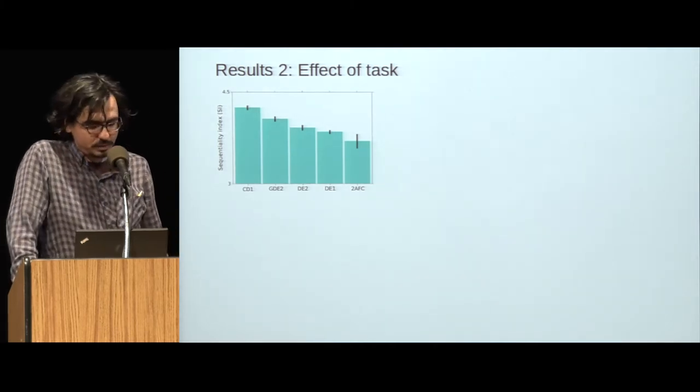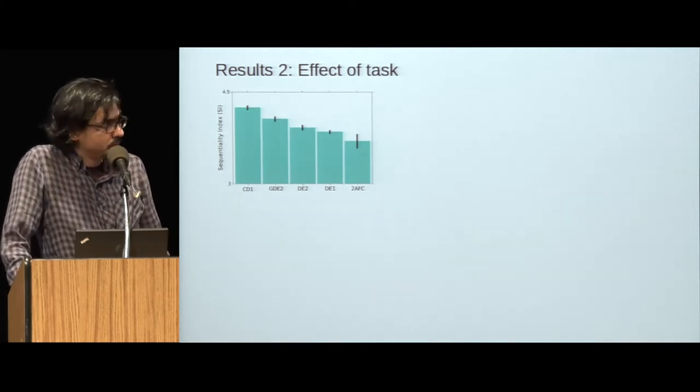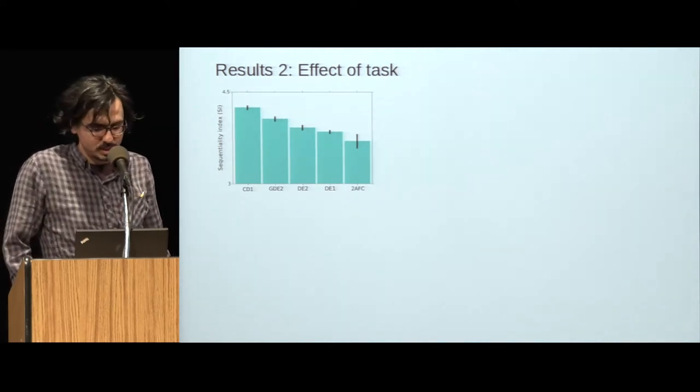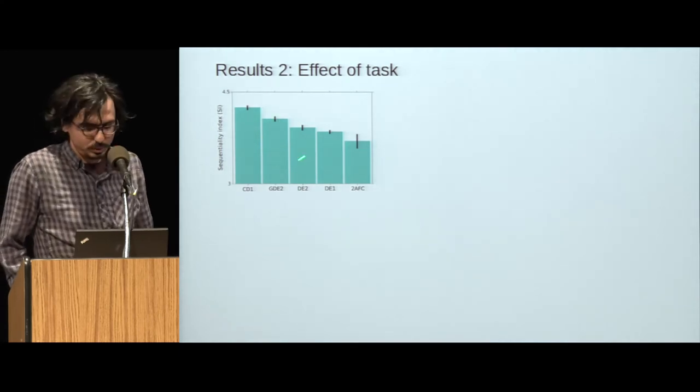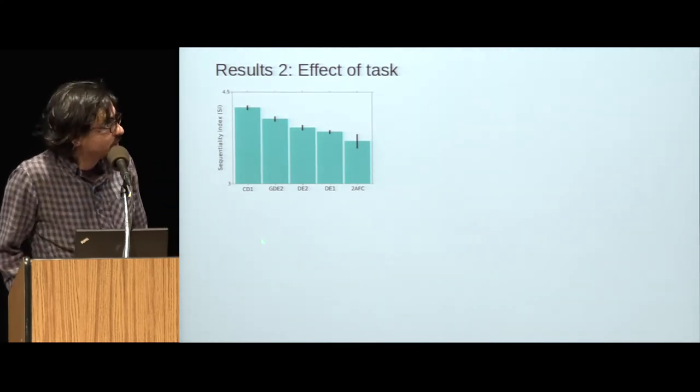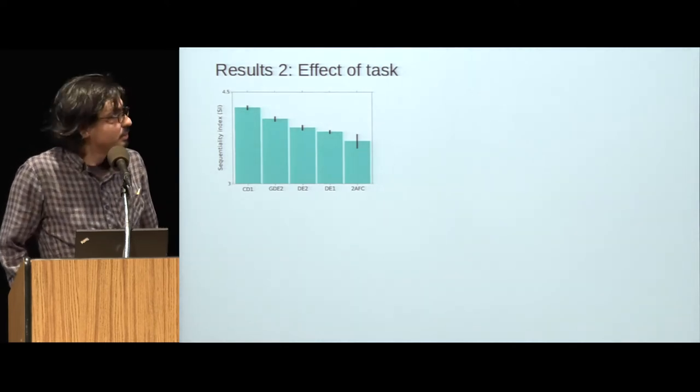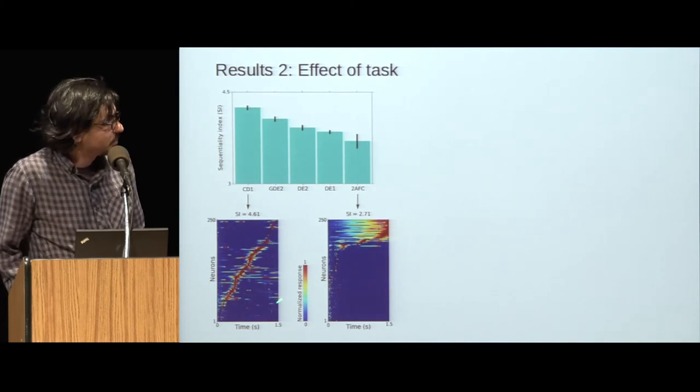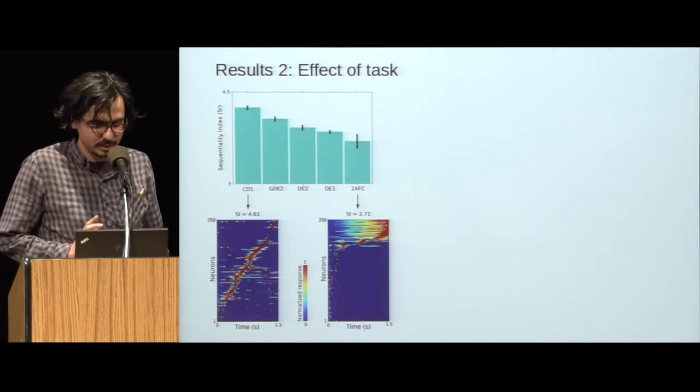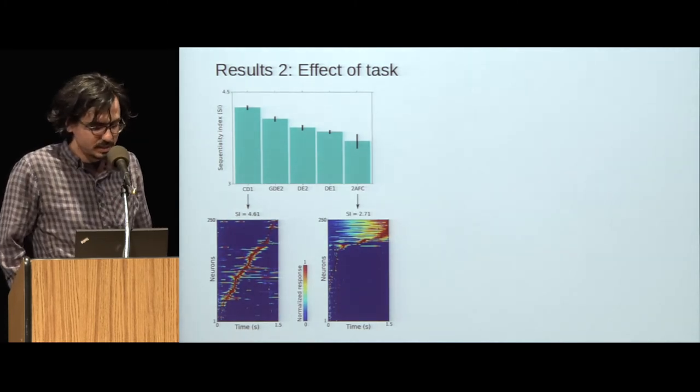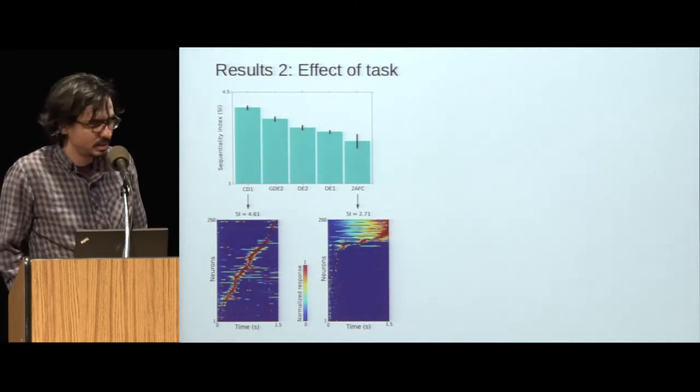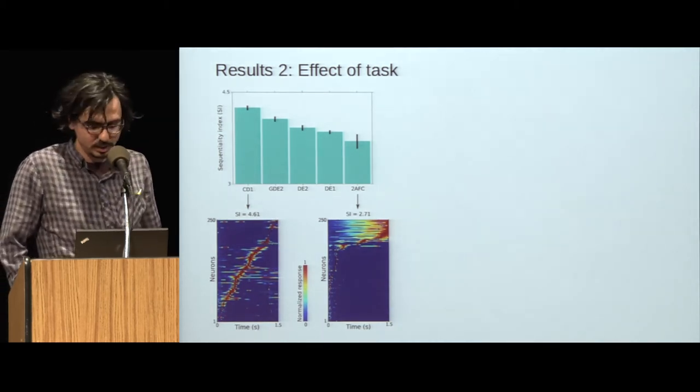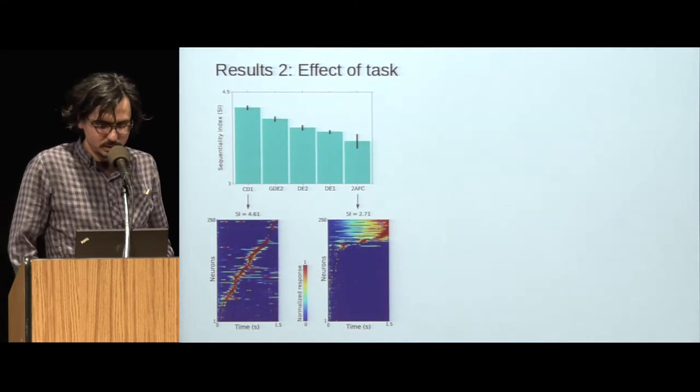Secondly, we look at the effect of task. We find a significant variation among tasks in their sequentiality index. Some of the tasks like change detection lead to highly sequential solutions, whereas others like the simple 2FC task lead to less sequential solutions. Here are example trials from each of these experiments using the exact same initial condition. In the change detection task, there's a clear sequential structure, whereas on the 2FC task, most of the neurons tend to ramp up toward the end of the trial, which leads to much less sequential responses.